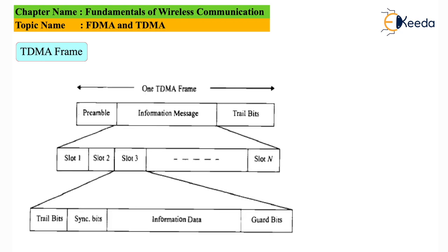Now we will look at how the TDMA frame is constructed. As we can see, first we have the preamble, then the information, and then the trail bits. Preamble and trail bits are used for synchronization from transmitter to receiver and vice versa. Information is divided into multiple slots depending on how many users are active. Every slot again has trail bits, data, synchronization bits, and guard bits. Trail bits and synchronization bits handle synchronization of the data, while the data field carries the actual user message. Guard bits are provided as empty time space to prevent overlapping if there is any delay in packet transmission.